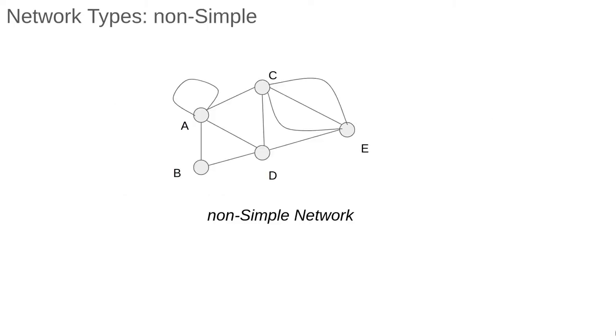The networks we have seen are simple networks. Here we have an example of a network with a self-loop on node A and a multi-edge between nodes C and E. Networks with self-loops and multi-edges are called non-simple. While we mostly avoid non-simple networks, there are cases, especially when detecting communities on networks, where we have self-loops.